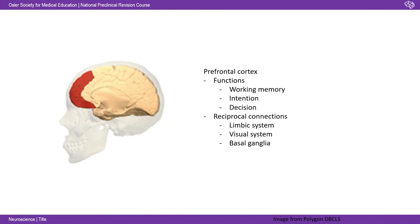Last but not least, the prefrontal cortex — the stuff right at the front. Its functions include working memory, intention, and decision-making — the stuff that sort of makes us us. It has reciprocal connections with the limbic system, the visual system, and the basal ganglia. You might remember the story of Phineas Gage, who displayed uncharacteristic behaviour after a railroad rod went through his PFC. The prefrontal cortex is really the hub of personality and the decisions that make you who you are.